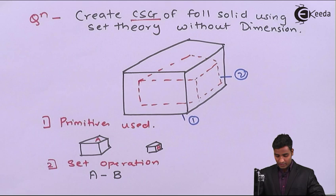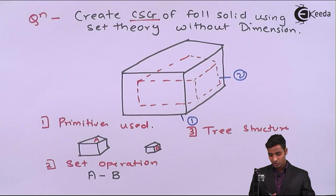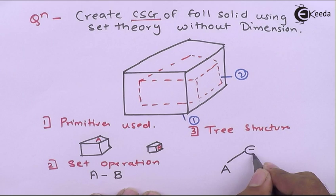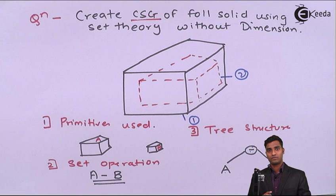Third is tree structure. On the basis of this set operation solution, the tree structure is developed. There are two cubes A and B, and the operator used is minus. So the tree structure is A minus B, depending upon this set operation.